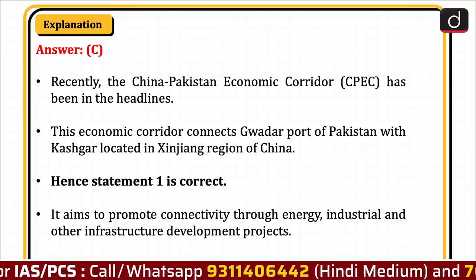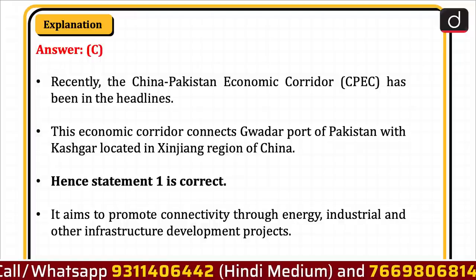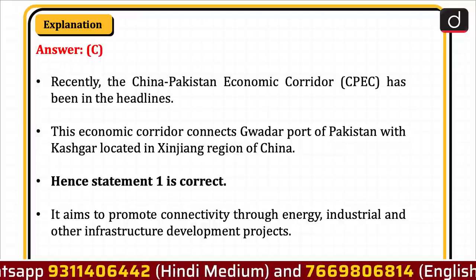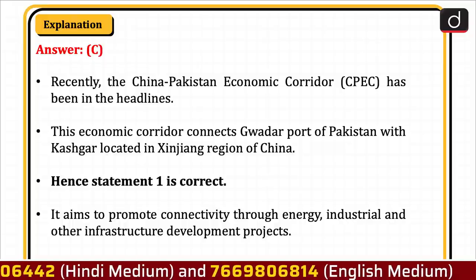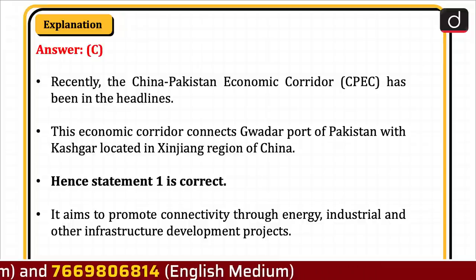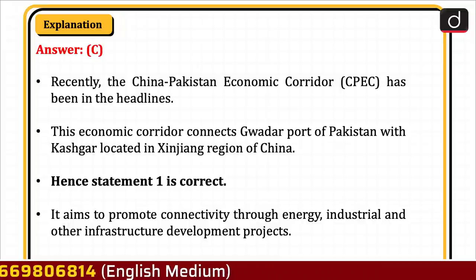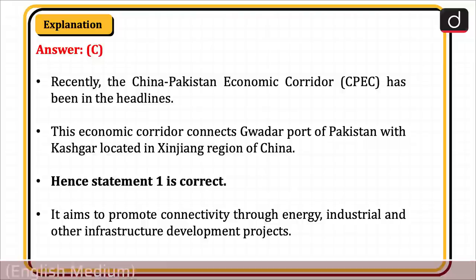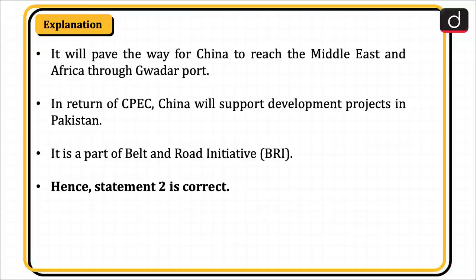Recently, the China-Pakistan Economic Corridor (CPEC) has been in the headlines. The Economic Corridor connects Gwadar Port of Pakistan with Kashgar located in Xinjiang region of China. Hence, statement 1 is correct. It aims to promote connectivity through energy, industrial, and other infrastructure development projects. It will pave the way for China to reach the Middle East and Africa through Gwadar Port. China will support development projects in Pakistan. It is a part of Belt and Road Initiative (BRI). Hence, statement 2 is also correct.